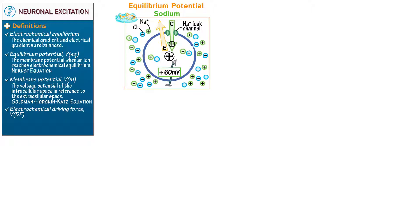Even still, potassium is far and away the most permeant ion in a neuronal membrane. So although we have to account for multiple ions, the strongest influencer is potassium. Let's take a look at its electrochemical gradient.